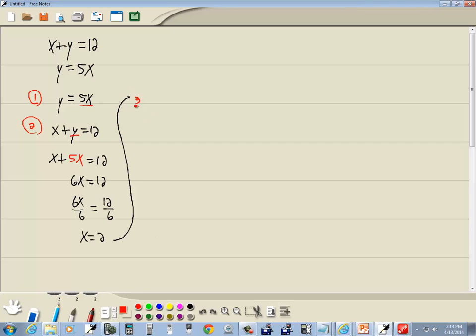Step three: plug that into the equation from step one. We have y equals 5x, and x is 2, so plug in 2 for x. Five times 2 is 10. So our answer is (2, 10).